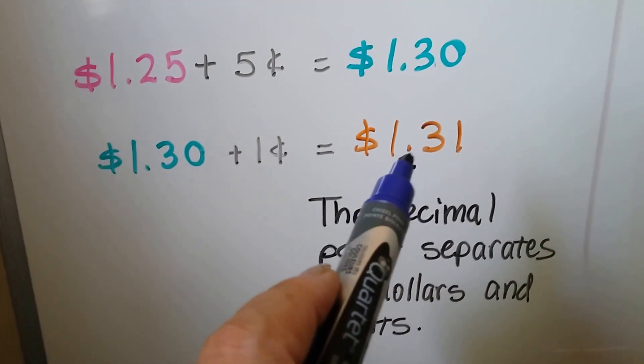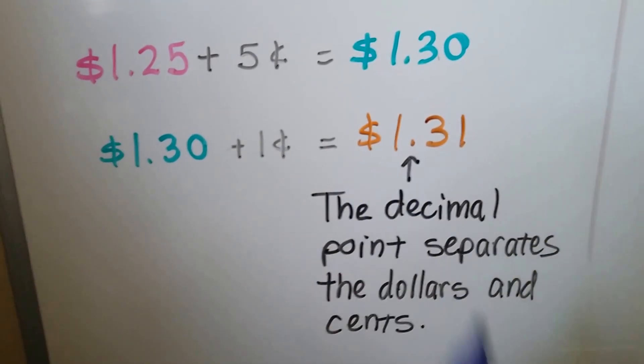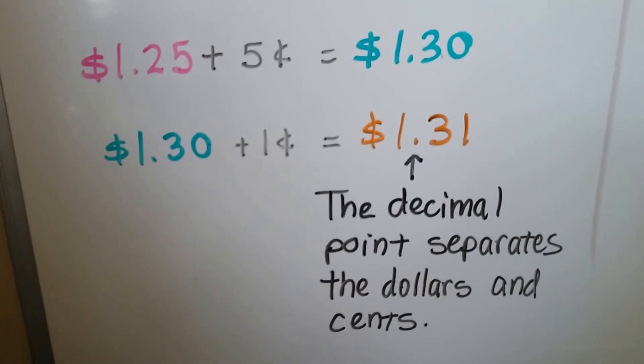And this little point right here, see that little dot? That's a decimal point and it separates the dollars from the cents. Keeps them apart from each other.